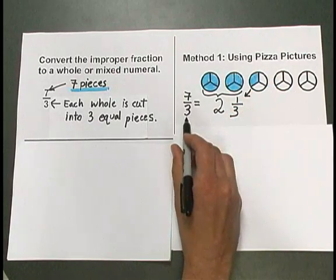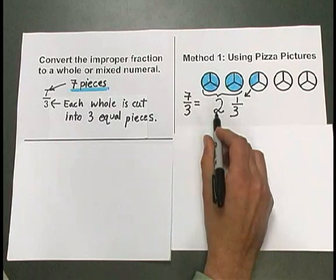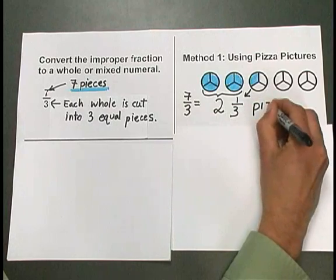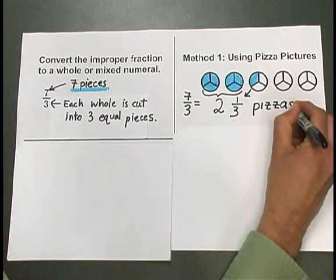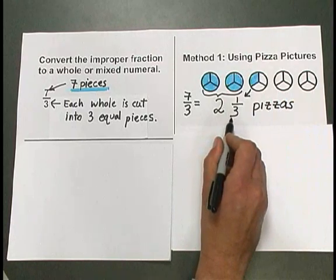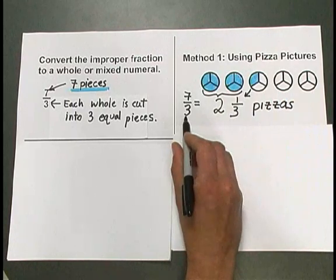So 7 thirds is equal to 2 and 1 third pizzas. 2 and 1 thirds is a mixed numeral that's equal to 7 thirds.